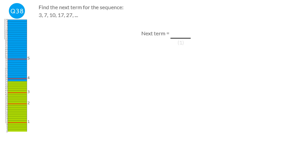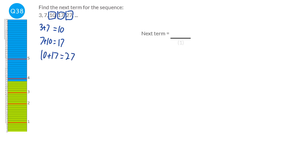To get 10 we add 3 and 7. To get 17 we add 7 and 10. To get 27 we add 10 and 17. This is called a Fibonacci sequence — you add the previous two terms to get the next term. So we simply add 17 and 27 to get 44. Our next term is 44.